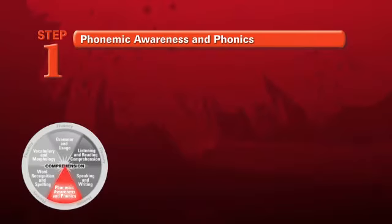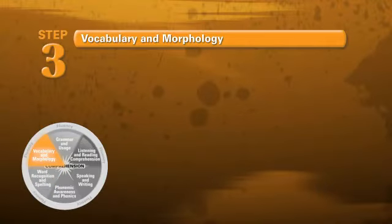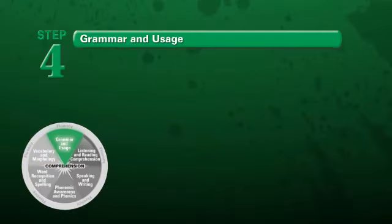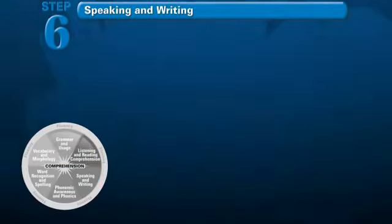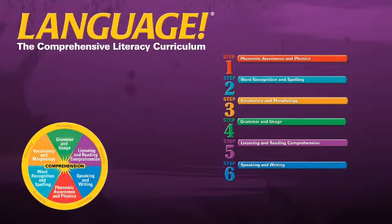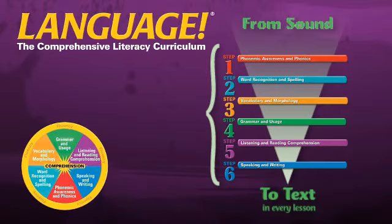Each of these components becomes a step of instruction in each lesson: phonemic awareness and phonics; word recognition and spelling; vocabulary and morphology; grammar and usage; listening and reading comprehension; speaking and writing. This structure of the curriculum means that students work through each major area of literacy from sound to text in every lesson. Let's take a look at each of the six steps from sound to text in more detail.